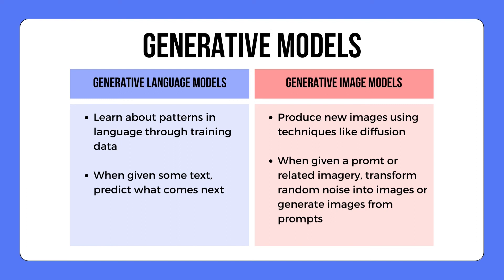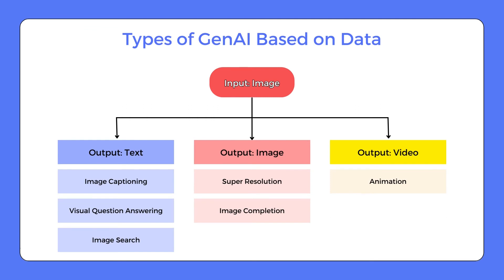We also have generative image models, which take an image as input and can output text, another image, or video. For example, under output text, you can get visual question answering — a task in computer vision that involves answering questions about an image. Under output image, an image completion is generated, and under output video, an animation is generated.